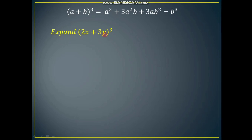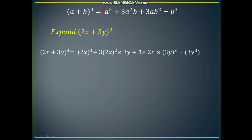We have to expand (2x + 3y)³. This expression is in the form (a + b)³, so we use the expansion formula. Writing it out: the cube of the first term 2x is (2x)³, plus 3 times (2x)² times 3y, plus 3 times 2x times (3y)², plus the cube of the second term (3y)³.